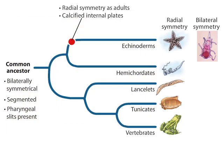Living echinoderms also lack pharyngeal slits, a feature found at some stage during the development of all other deuterostomes. However, gill-like structures have been found in fossilized ancestral echinoderms, so echinoderms did at one time have pharyngeal slits, but lost them during their evolution.